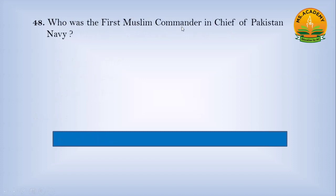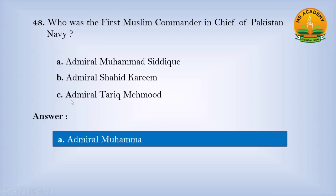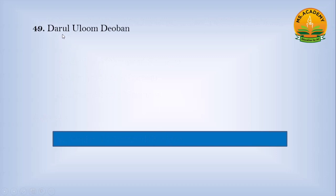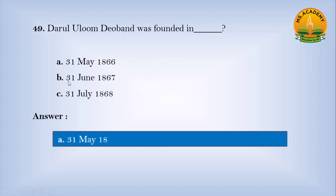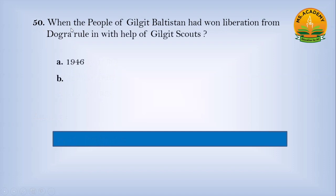Who was the first Muslim Commander-in-Chief of the Pakistan Navy? Option A, Admiral Mohamed Siddiq; Option B, Admiral Shahid Karim; Option C, Admiral Tariq Mehmood. Answer: A — Admiral Mohamed Siddiq. Darul Uloom Deoband was founded in: Option A, 31st May 1866; Option B, 31st June 1867; Option C, 31st July 1868. Answer: A — 31st May 1866. When did the people of Gilgit-Baltistan win liberation from Dogra rule with the help of Gilgit Scouts? Option A, 1946; Option B, 1947; Option C, 1948. Answer: B — 1947.